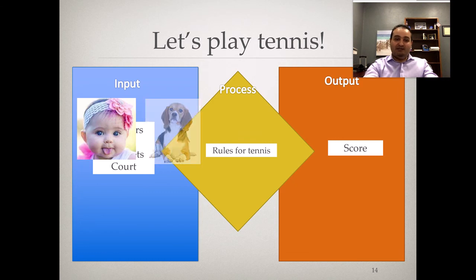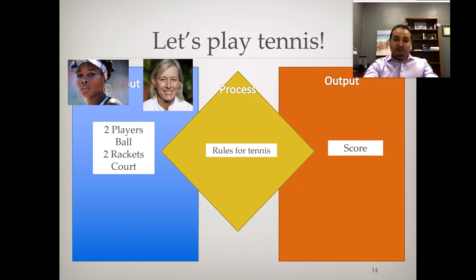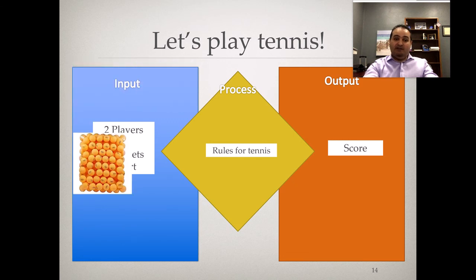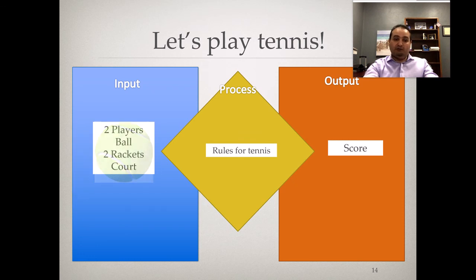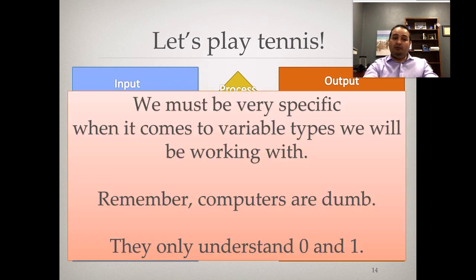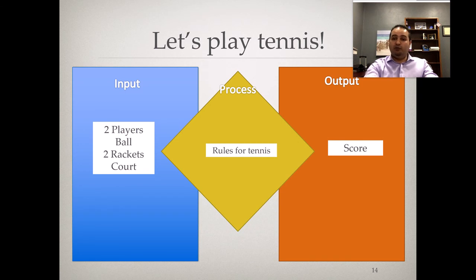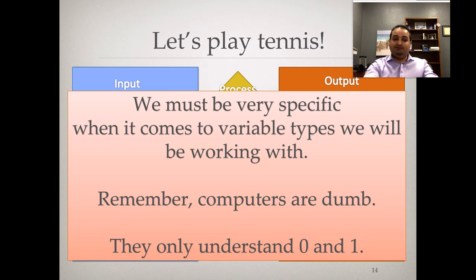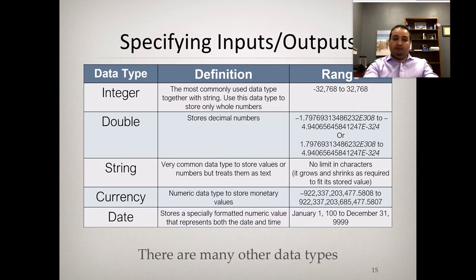We need to be very specific with our input — who are the players, kids or professionals, and what type of ball, ping pong, football, or tennis ball? We will use this logic when programming. It's very important that we declare the types of variables — whether a variable will be text, numeric, or a date — because computers need to be told exactly what type of variable to expect.